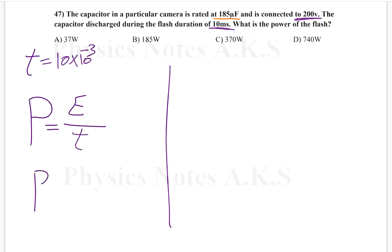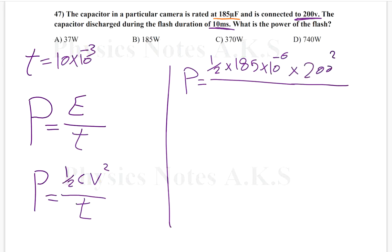So power will be—I know the formula of energy depending on the information that I have is going to be half C V squared over time. Now power equals half times C, it's 185 times 10 to the power negative 6, times V squared, it's 200 squared, over the time, it's 10 times 10 to the power negative 3.